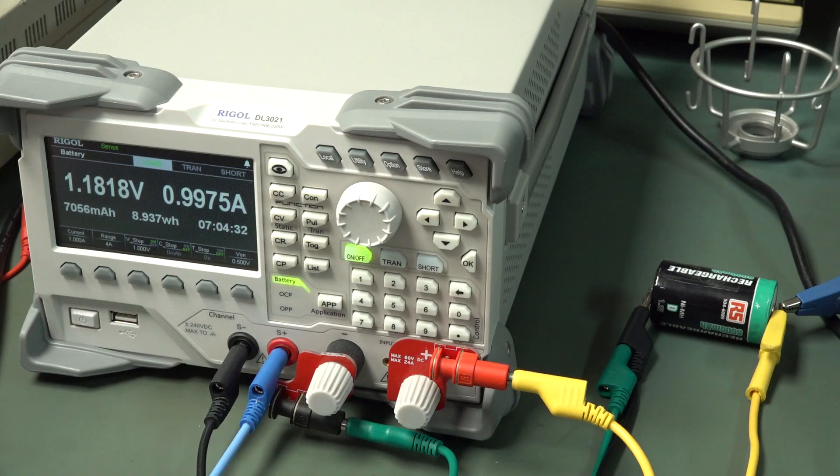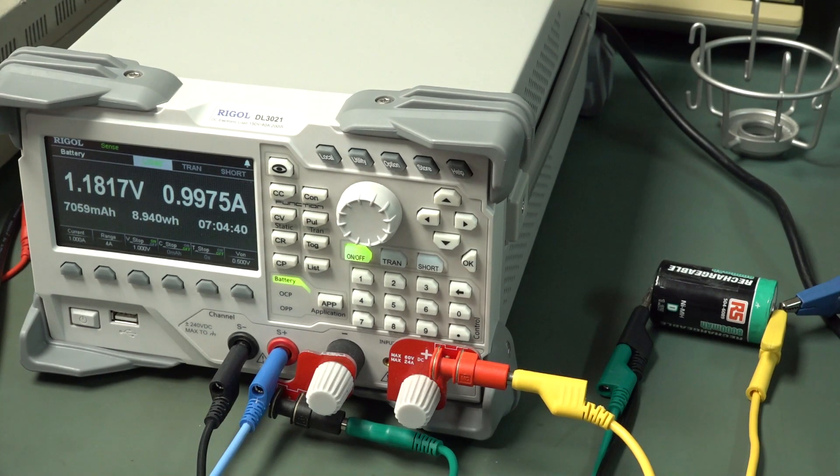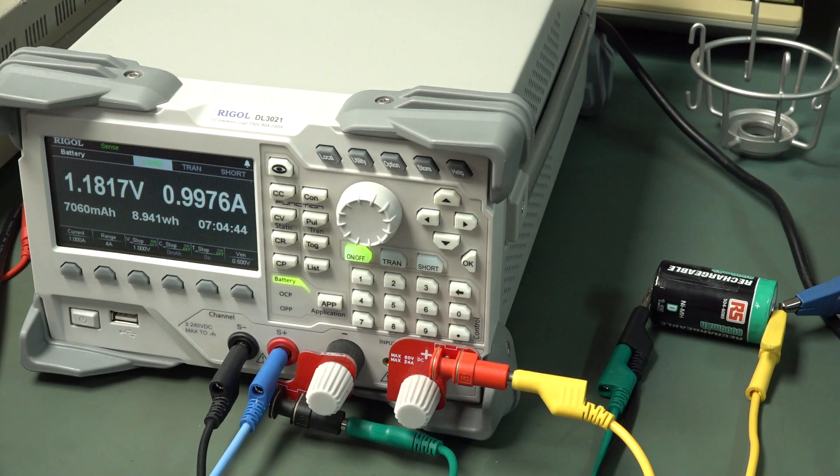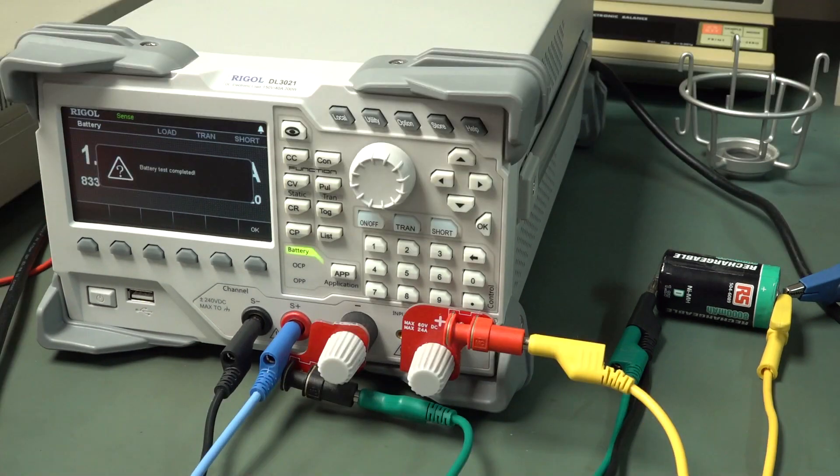There you go, 7 hours later, and it's made it to 7,000 milliamp hours, and we've still got 1.08 volts left. So it looks like it may actually make the 8,000 rating. Could even be more, because we're only at an amp, which is a significant amount of current. It's not small, but it's certainly not 1C, which would be 8 amps.